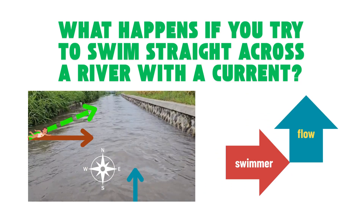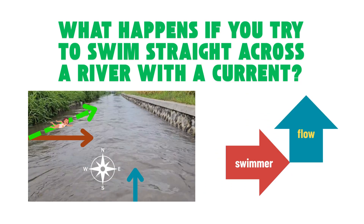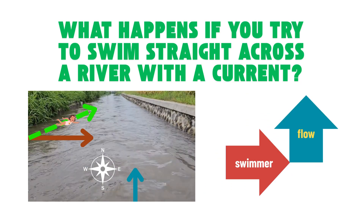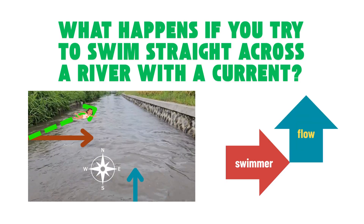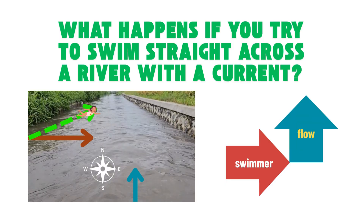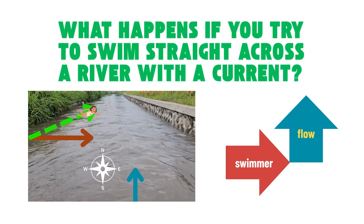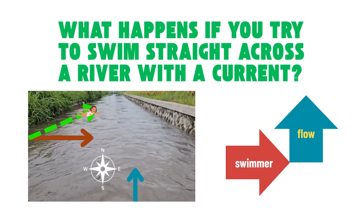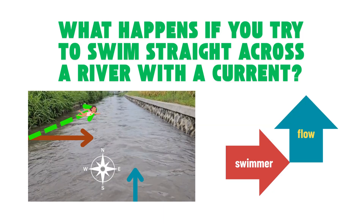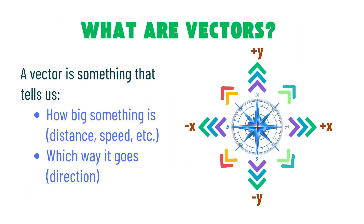Now, let's jump into another real-life example: swimming across a river. Imagine you aim straight toward the opposite bank, but the river current pushes you downstream. As you can see, in all these real-life situations, both speed and direction matter. To really make sense of them, we need to talk about vectors.